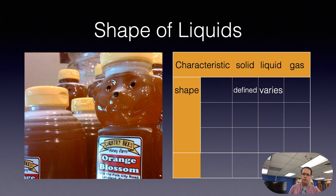Now, we say a liquid, however, varies its shape. So, a liquid can adopt the shape of its container, and you have some pictures of some honey jars here. The one on the left, the liquid honey adopts the shape of a cylinder, and the honey jar on the right, it adopts the shape of a teddy bear. So, since liquids are shapeshifters, we say that the shape is indefinite or varies.